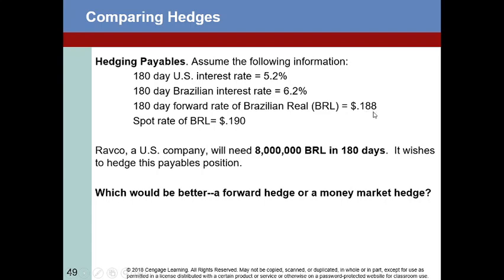You may recall from similar earlier problems that we had two sets of rates — a lending rate and a borrowing rate. Here, just imagine these rates are relevant to this particular setting. We want to lock in a purchase price in dollars. Let's go ahead and get the forward hedge out of the way first because it's the easiest, and then we'll come back to these rates to make sense of the money market hedge.